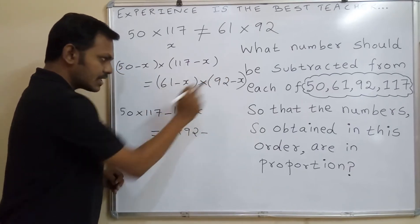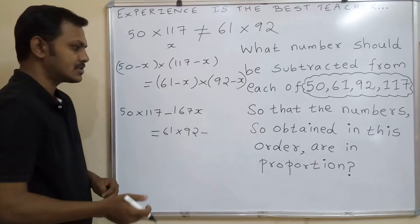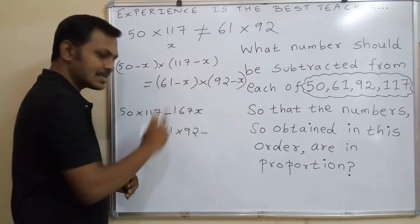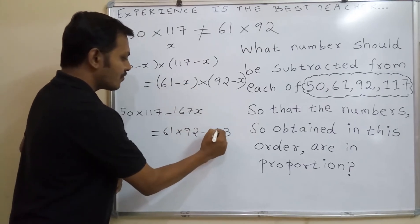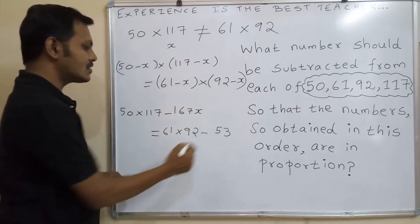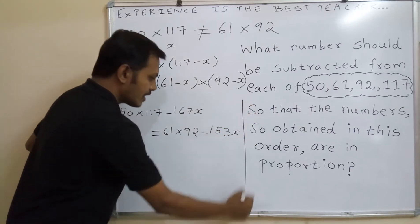Minus 61 into x minus x, we will get minus 61x. Minus x into 92 you will get minus 92x. By adding this you will get 153x. Now we can, no need to write here x square, that side also x square. As I told you, we can cut both x square and x square.